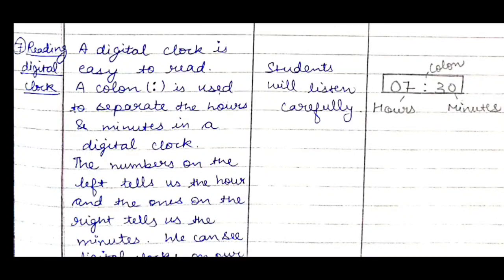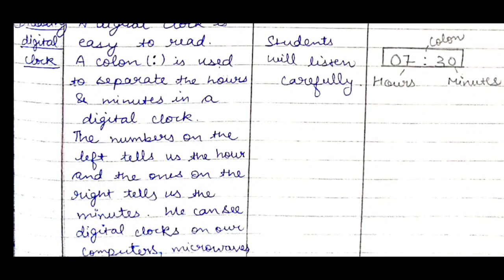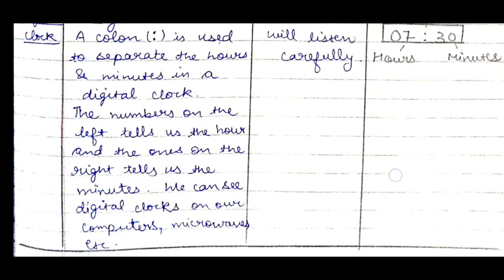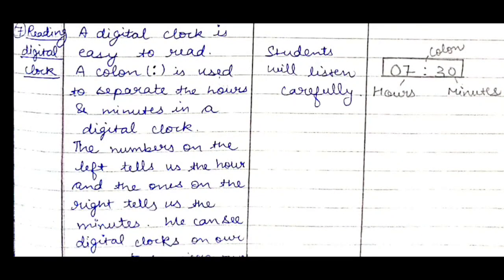The next teaching point is reading the digital clock. A digital clock is easy to read. A colon is used to separate the hours and minutes — we can write it on the board and show them, like 7:30 labeled with the colon. The numbers on the left tell us the hour and the ones on the right tell us the minutes. We can see digital clocks on computers, microwaves, and mobile phones, giving students various real-life examples.